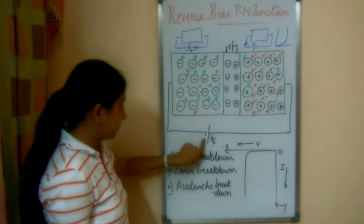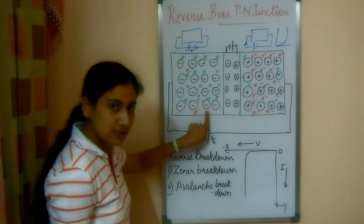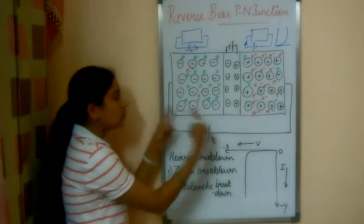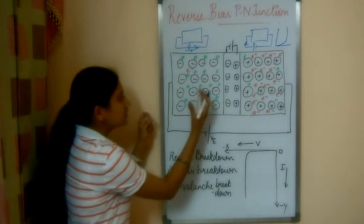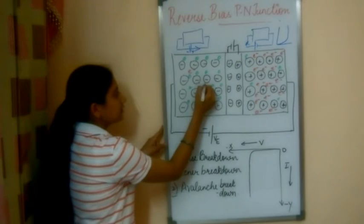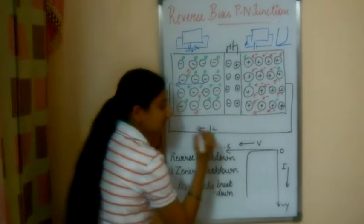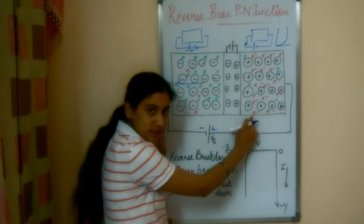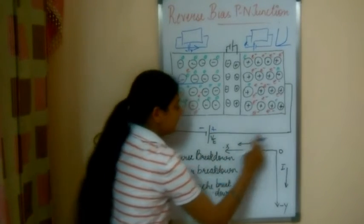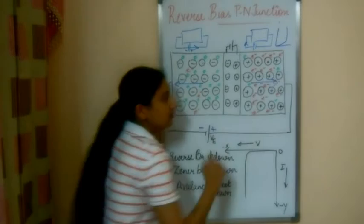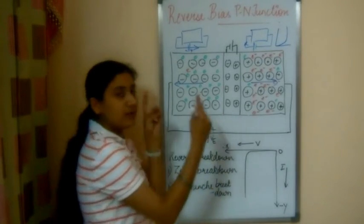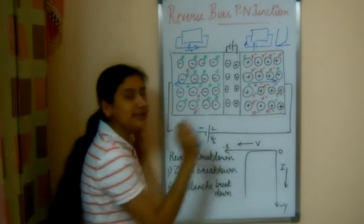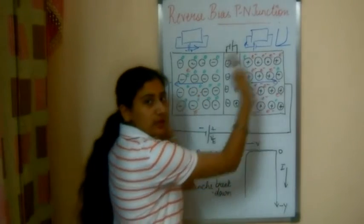The negative terminal of the battery is connected to the P-type. In the P-type, holes are the majority carriers. The negative terminal will attract the holes because holes carry positive charge, so the holes start moving away from the junction toward the negative terminal. Similarly, the positive terminal is connected to the N-type semiconductor, where electrons are the majority carriers. Since electrons are negatively charged, they will be attracted toward the positive terminal and move away from the junction. For current to flow, holes and electrons must move across the junction, but here they are both moving in opposite directions — away from the junction.